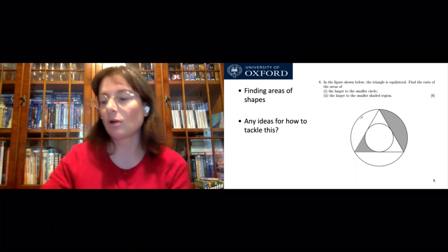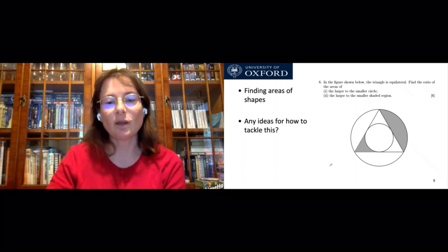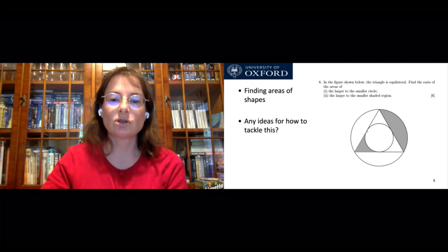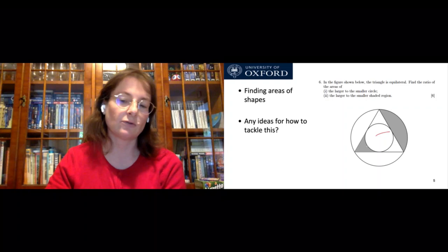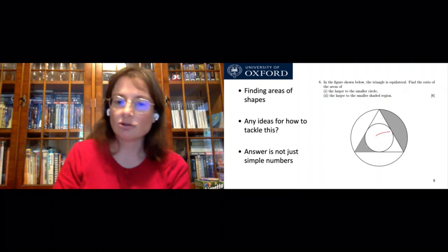Here's another common question about finding the areas of shapes. You're told you've got two circles and an equilateral triangle. The question asks for the ratio of the areas of the larger circle to the smaller circle, and also the larger shaded region to the smaller shaded region. I warn you now — the answer is not just simple numbers.